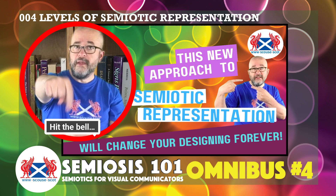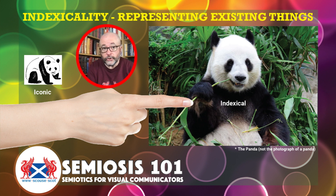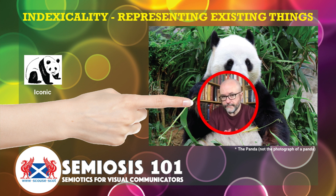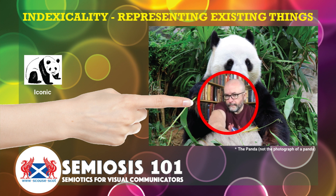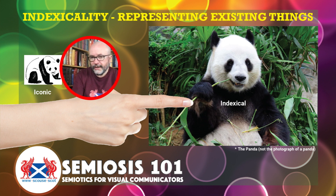Welcome to this week's talk. We've now moved up from iconicity, and we're going to be looking at indexicality. Within Peirce's semiotic theory, indexicality is the second level of representation of the concept that we need to visually communicate. What we're seeing here is the index. Think of the index finger as a way of getting your head around indexicality, because the finger points, and we're going to keep coming back to this throughout today's talk.